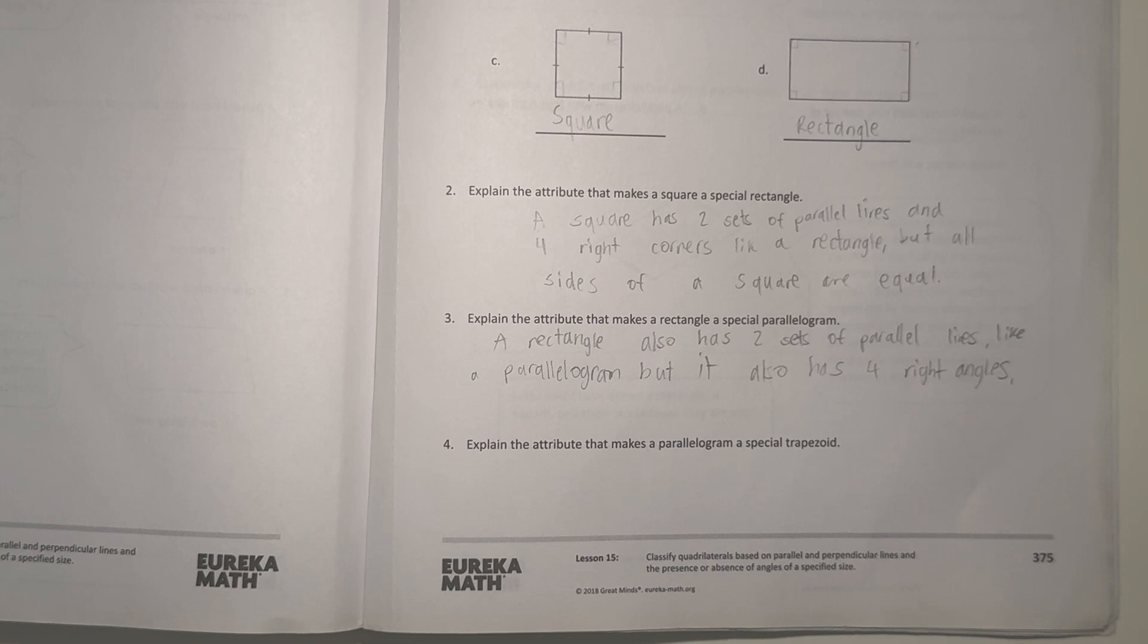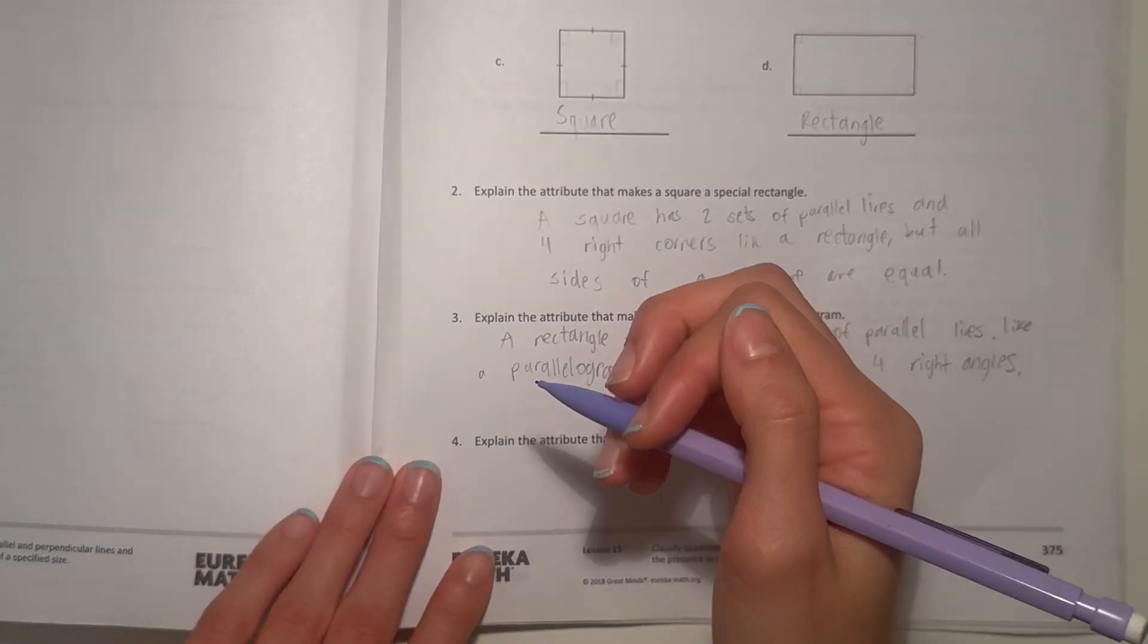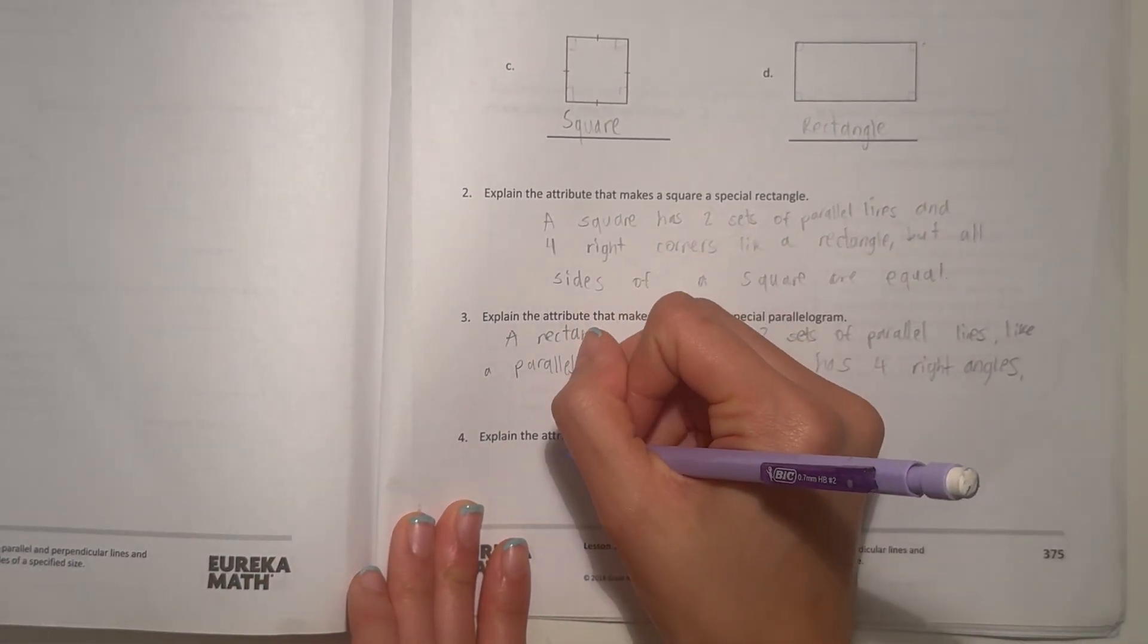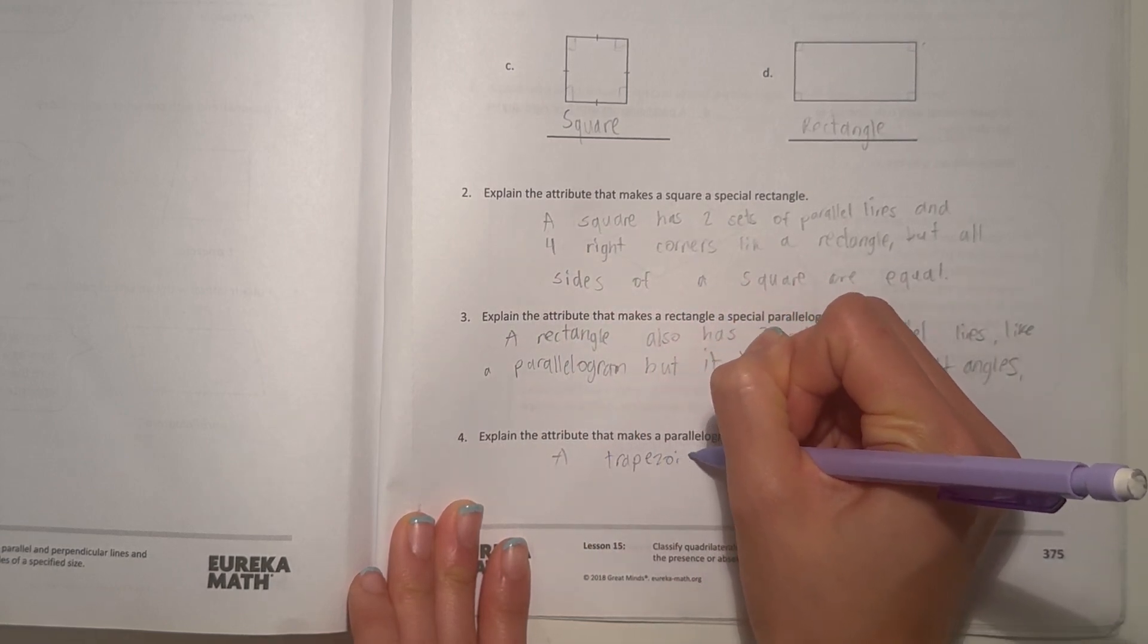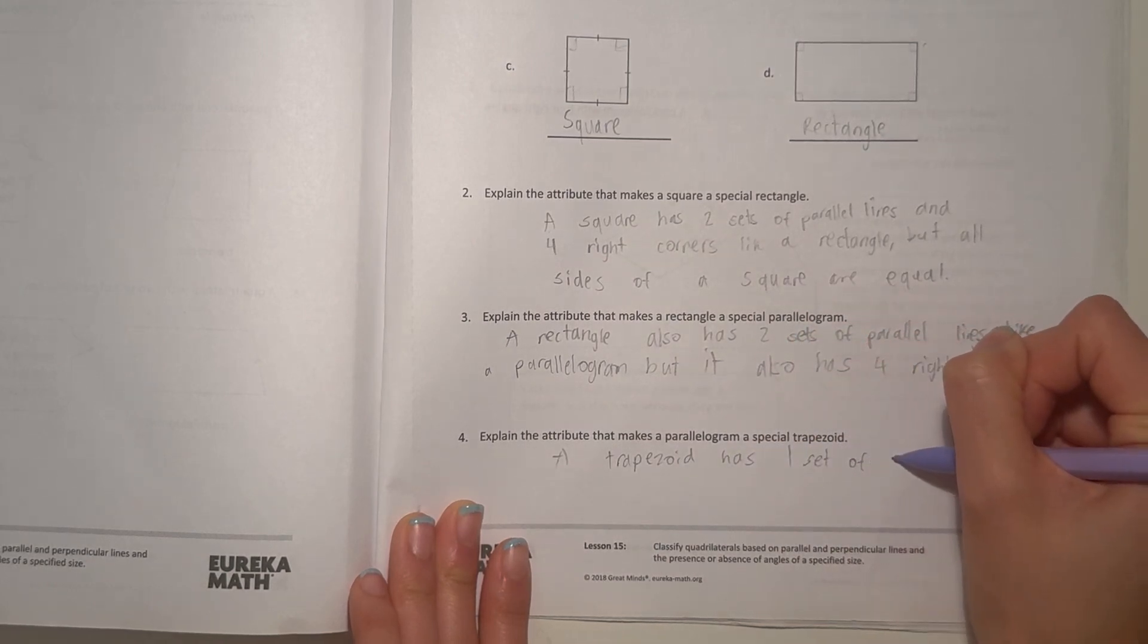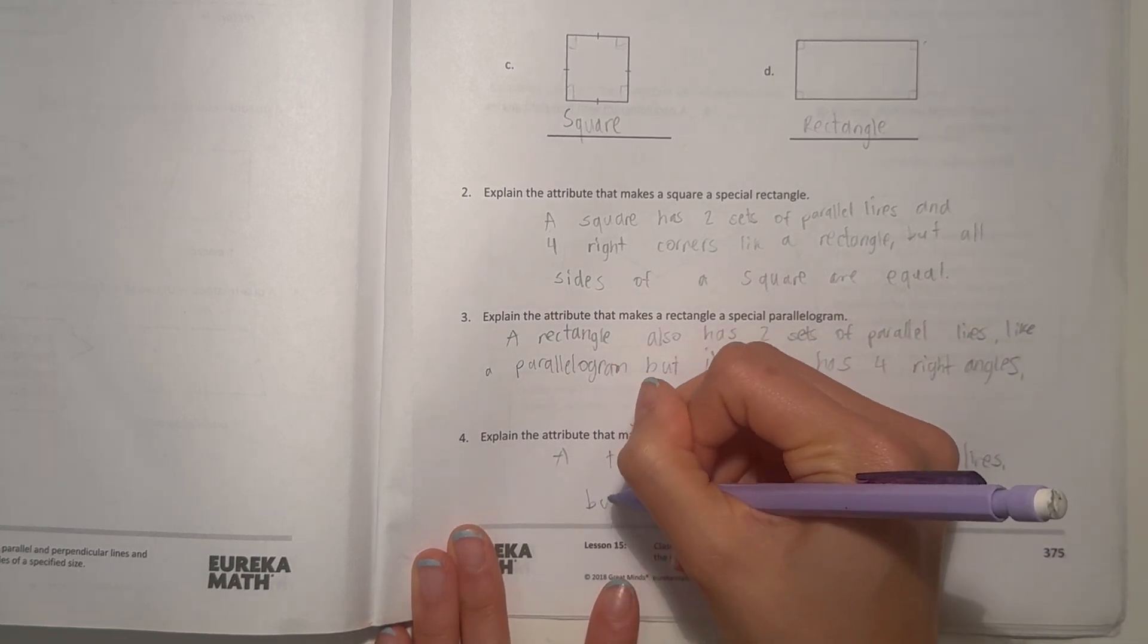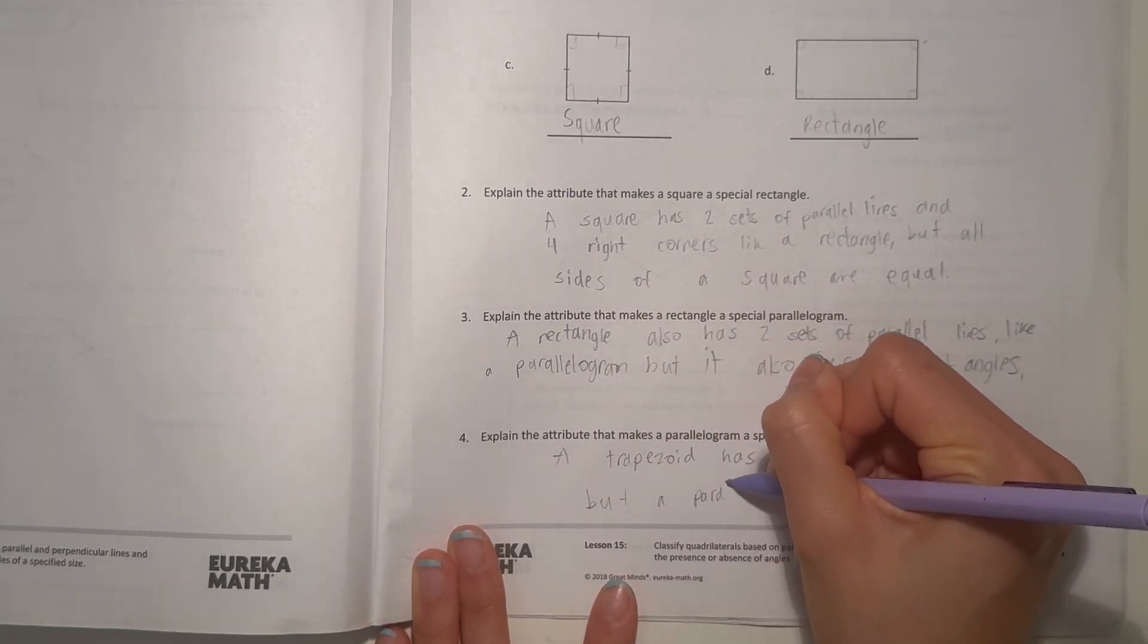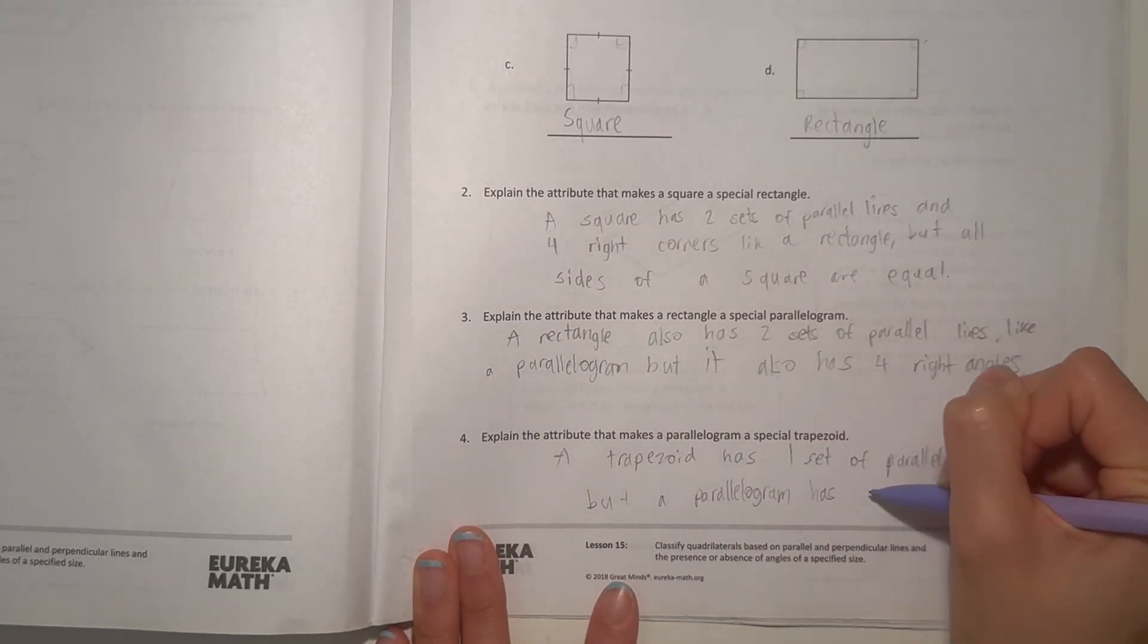But parallelogram has two. So a trapezoid has one set of parallel lines but a parallelogram has two.